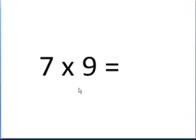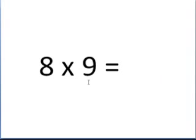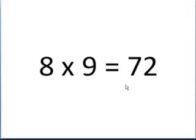7 times 9 is 63. One less than 7 is 6, and 6 plus 3 is 9. 8 times 9 is 72. One less than 8 is 7, and 7 plus 2 is 9.